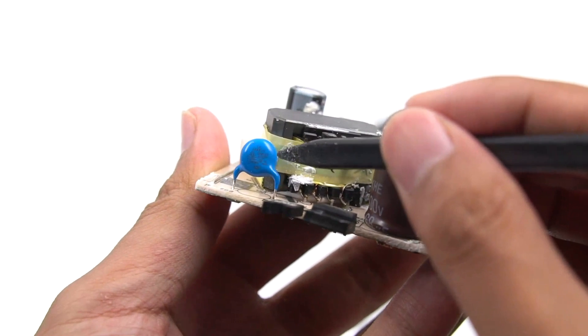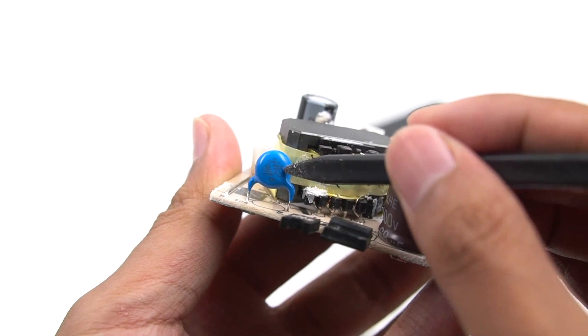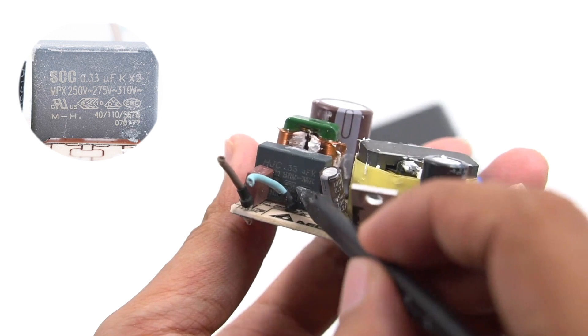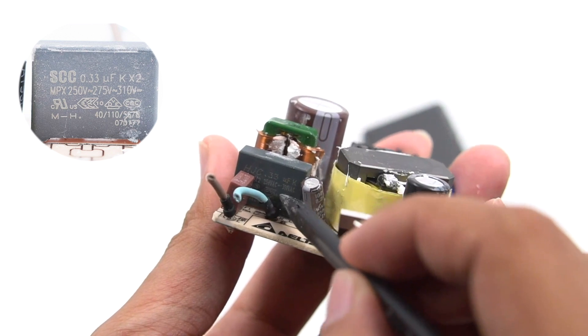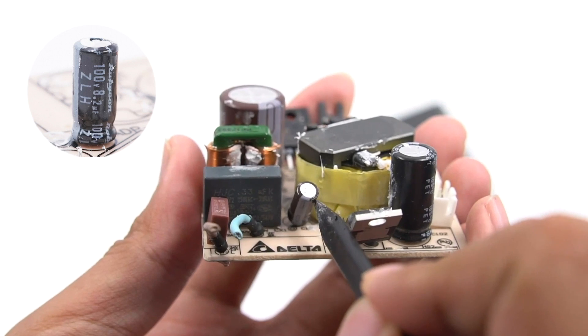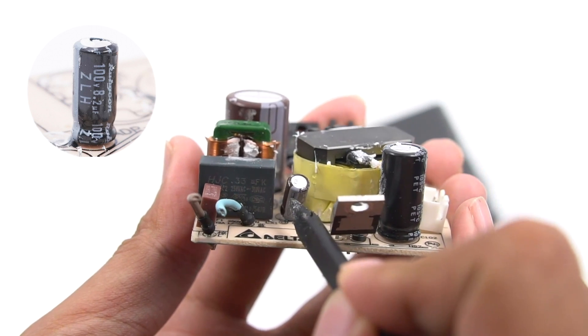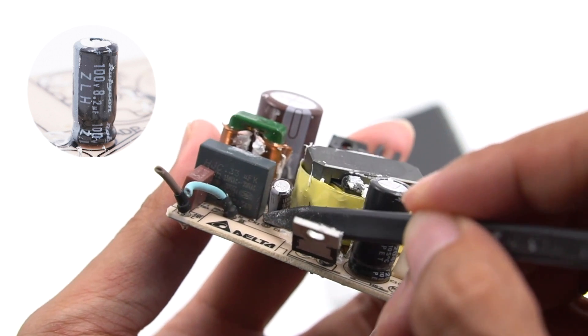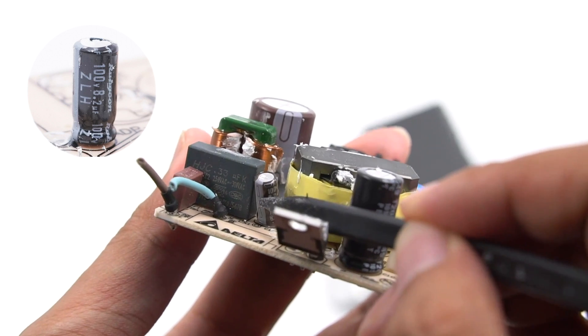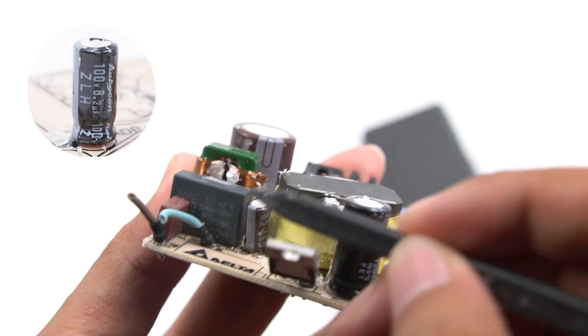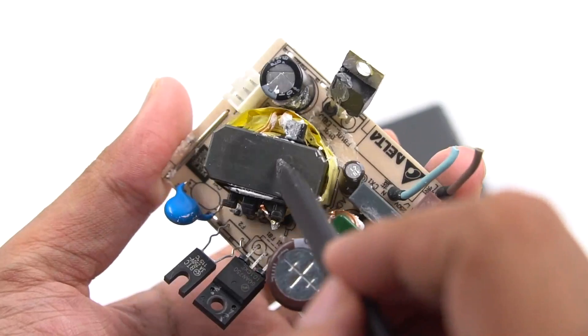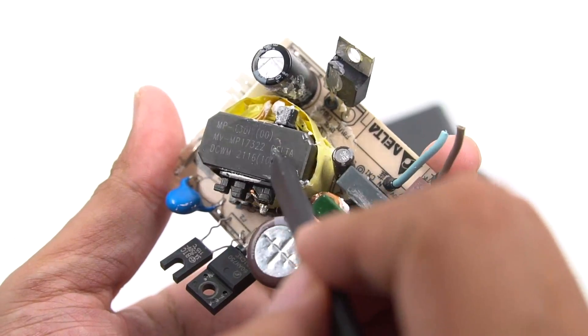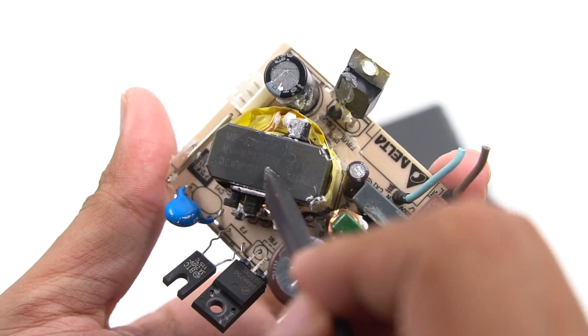The blue one is the Y capacitor, which is used for output anti-interference. Here is a safety X capacitor. Capacity is 0.33μF. The power supply capacitor of PWM chip is next to it, which comes from Rubycon. And the specification is 100V, 8.2μF. There is some information on the top of transformer and output by multi-strand core.